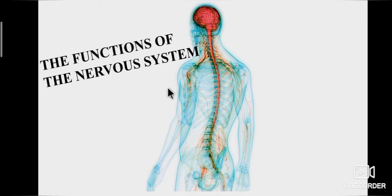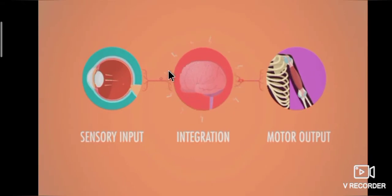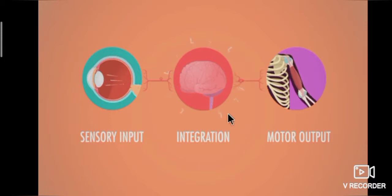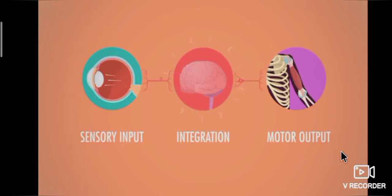Now we are going to learn about the functions of the nervous system. There are three functions: sensory input, integration and motor output. In sensory input, signals are conducted from sensory receptors. In integration, sensory signals are interpreted and responses are formulated. In motor output, signals are conducted from the brain and spinal cord to effectors such as muscle and gland cells.